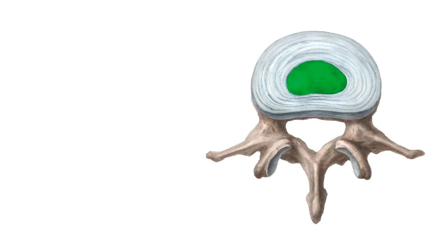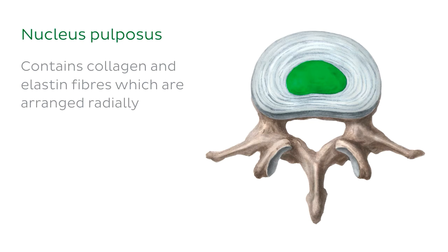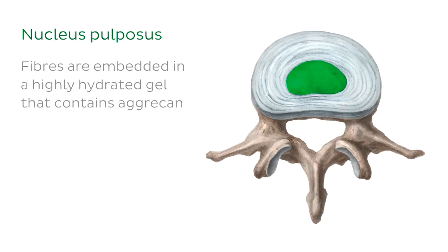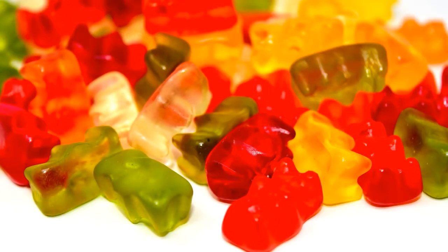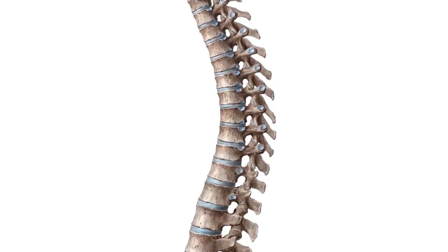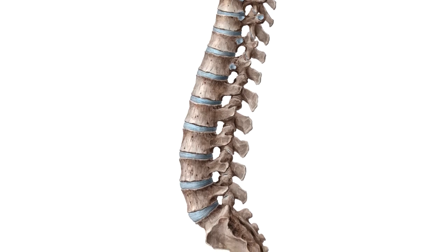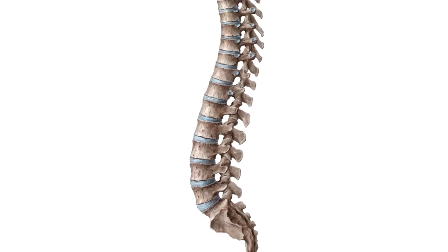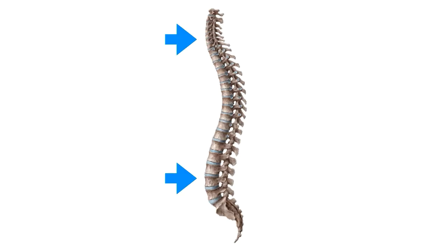The inner core of the intervertebral disc is known as the nucleus pulposus. It contains collagen fibres organized randomly, and elastin fibres arranged radially. These fibres are embedded in a highly hydrated gel rich with a unique proteoglycan known as aggrecan, giving it a jelly-like consistency. The intervertebral discs are thinnest in the upper thoracic region, and the thoracic discs are generally the same width throughout, whereas in the cervical and lumbar regions, the discs are thicker anteriorly, contributing to the normal cervical and lumbar lordoses.